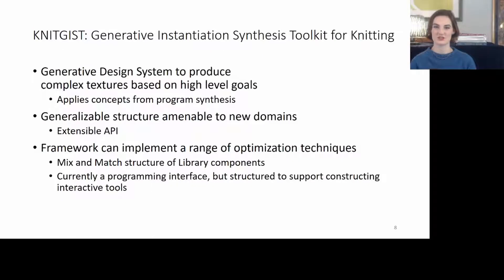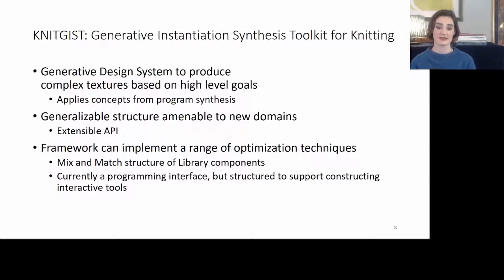We present KnitGist, a generative instantiation synthesis toolkit for knitting, which allows programmers to generate knitted objects based off of higher-level goals using an extensible API of objectives and tactics, which can be mixed and matched to create both genetic algorithms and hill-climbing algorithms.